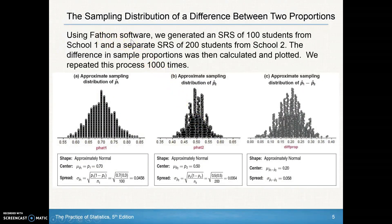Fathom software generated a simple random sample of 100 students from School 1 and a separate SRS of 200 students from School 2. Then the difference in sample proportions was calculated and plotted. They repeated this 1,000 times. Each dot represents one simulation of the difference between the two sample proportions.